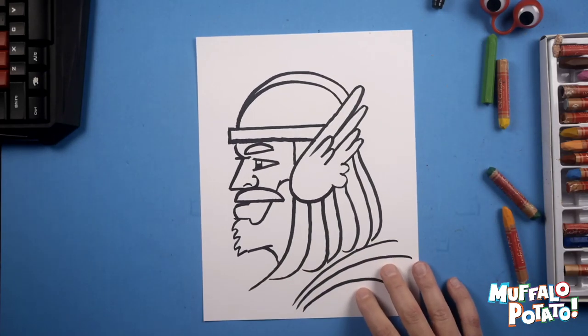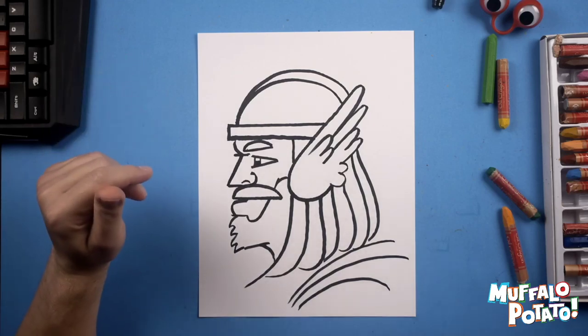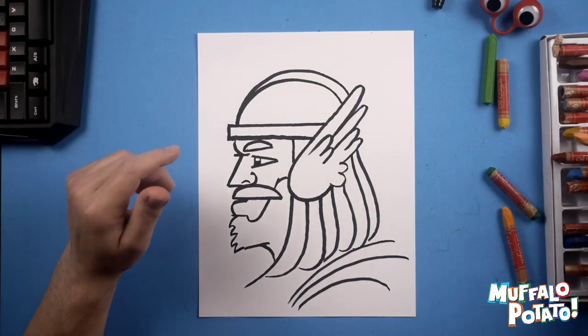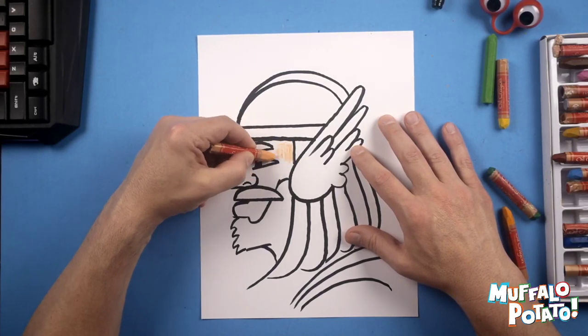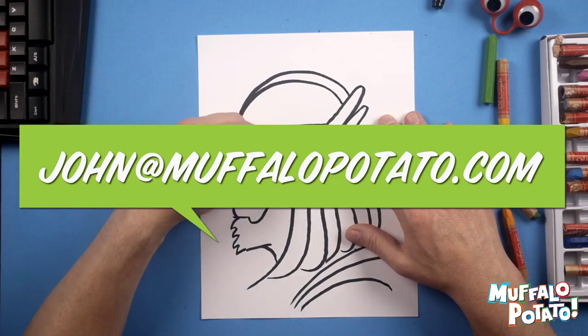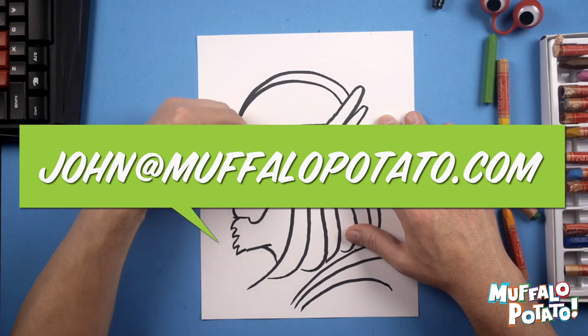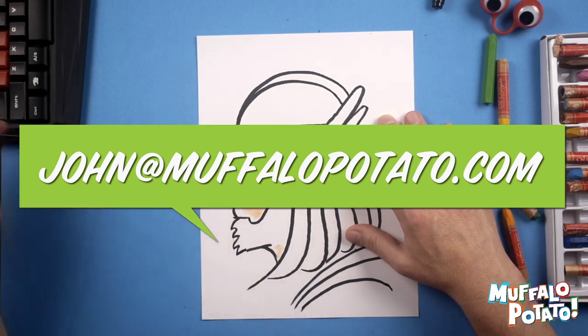Here comes the fun part, kids. Here comes the part where we get to color in Thor. So we get to have fun with our crayons. Well, I hope you had fun drawing Thor with me. I hope yours turned out well. Be sure to send it in to me, John at MuffaloPotato.com. Ask your parents permission first. Send me a picture of Thor. Let me see how it turned out for you.